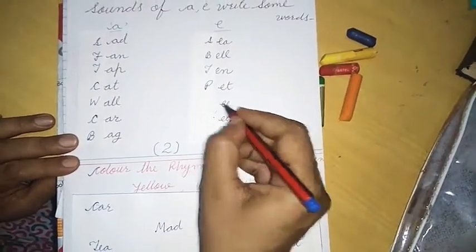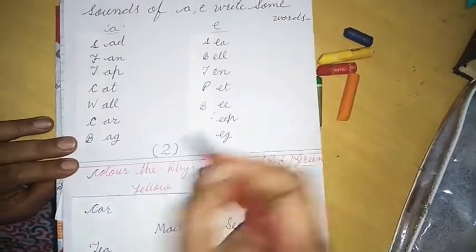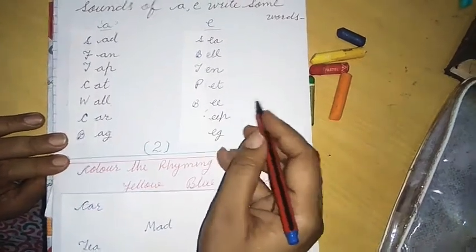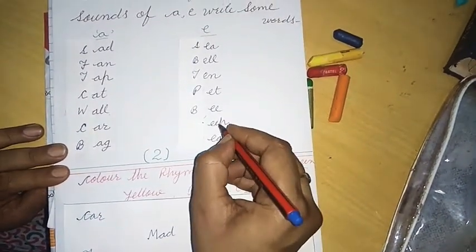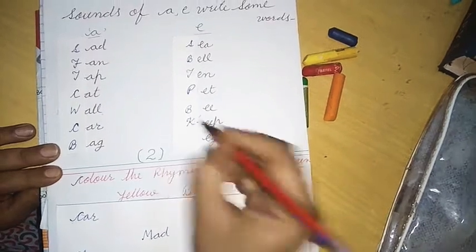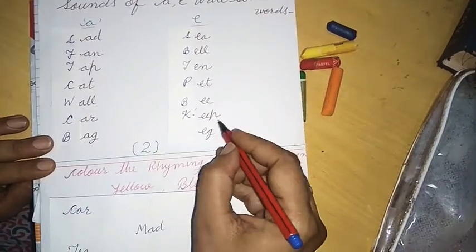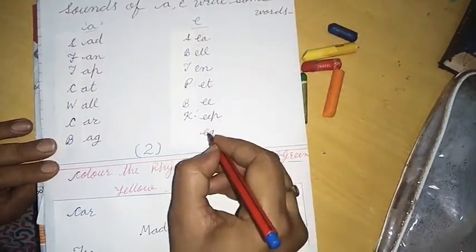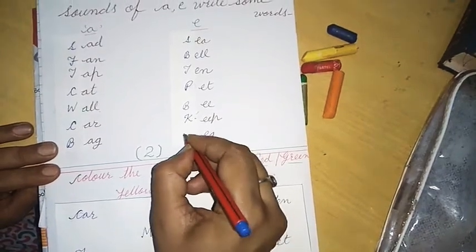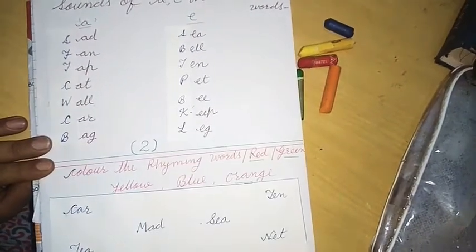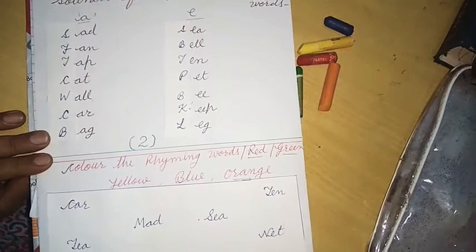This is EE. And here as we have taken B. So what has become? B. Level EP. Here we take K. Then what has become? Keep. And last is our E. Here we have taken L. So what has become? Leg.